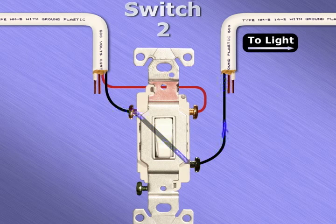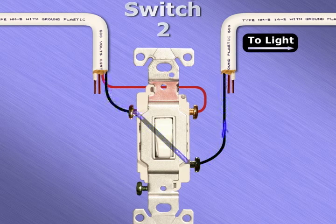Once the current arrives here, it will pass through to the three-way switch's common screw if the switch is in the down position.